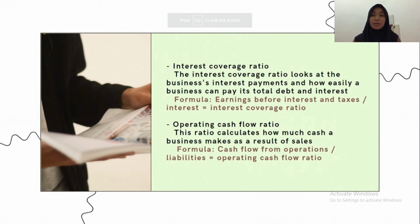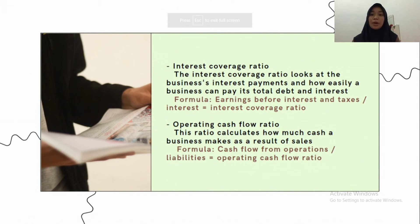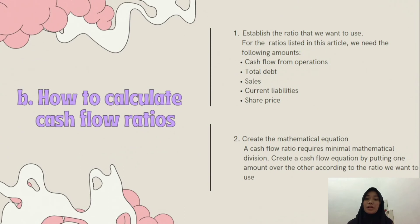The next ratio is operating cash flow. This ratio calculates how much cash a business makes as a result of sales. A preferred operating cash flow number is greater than one, because it means a business is doing well and the company has enough money to operate. Over time, a business's cash flow ratio amount should increase as it demonstrates financial growth. The formula is: cash flow from operations divided by net sales.